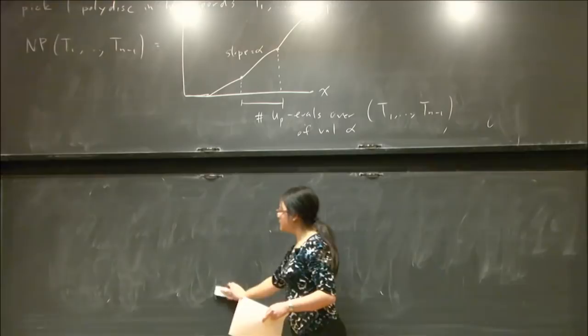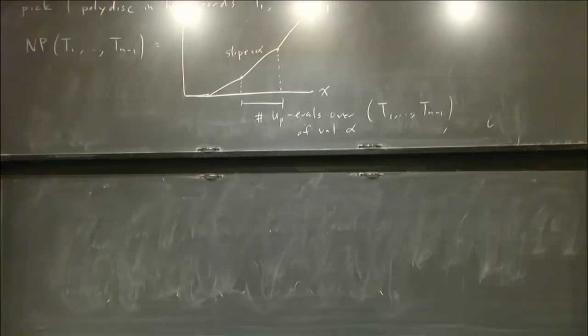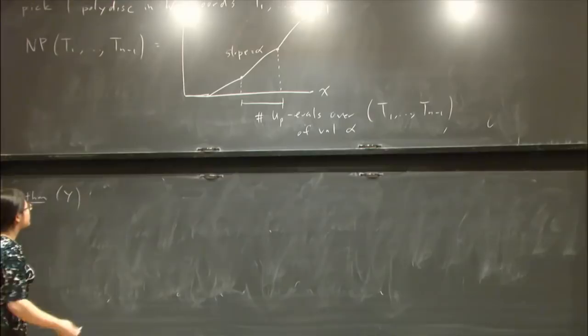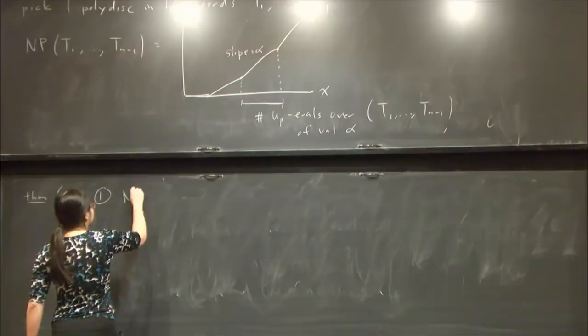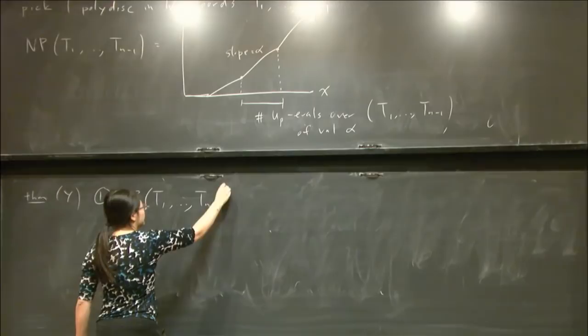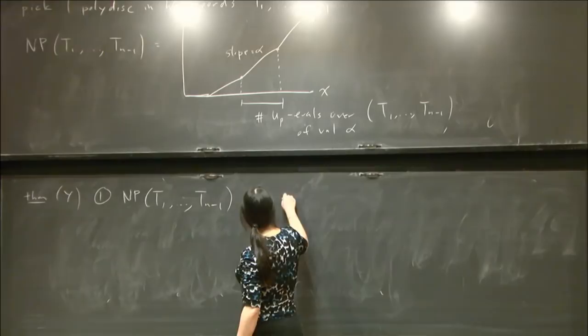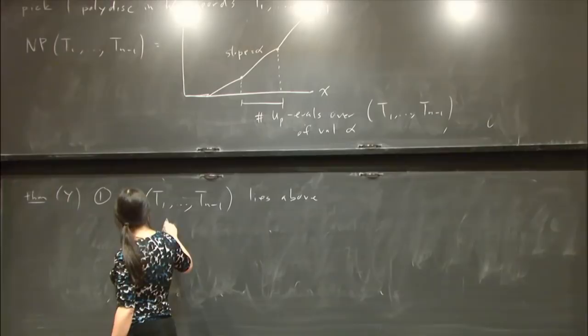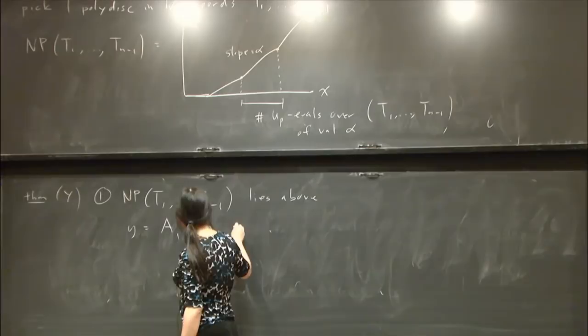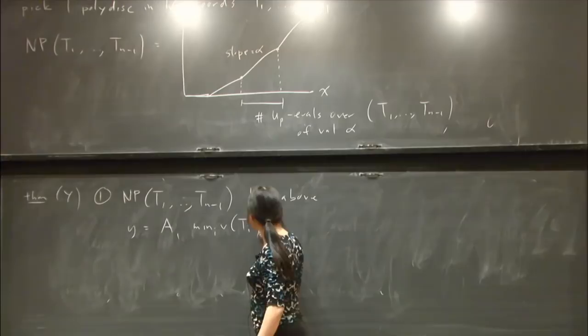Now I can state the theorem. I want to give upper and lower bounds for the shape of that polygon, and fortunately they'll look pretty similar. For the lower bound: the Newton polygon at this weight lies above the curve y = a_1 · min_i(v(T_i)) · x^{1 + 2/(n(n-1))} in the xy-plane.